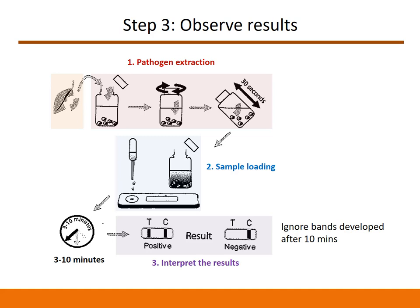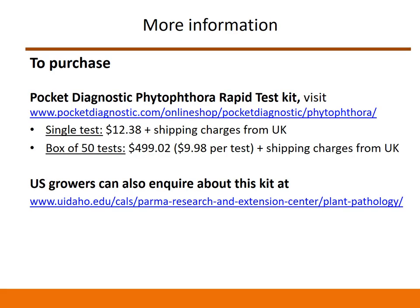If you see only one band at C, it means the test is negative and Phytophthora is not present in the sample. Even a faint band should be considered positive. If you do not see any bands within 10 minutes, it means the test has failed and results are inconclusive — the test must be repeated in this case. To purchase the Pocket Diagnostic kit, please visit the web links provided on the screen. US growers can also obtain this kit from their sales representative in the United States. Note that this test can only indicate presence or absence of Phytophthora and cannot give any information on species identification. If you are interested in knowing the species ID, you can send baits or plant samples directly to the plant disease clinics.